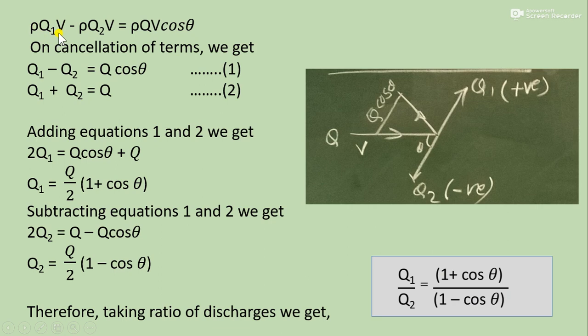So ρQ1V minus ρQ2V equals total mass flow rate ρQ and velocity component V cos θ.